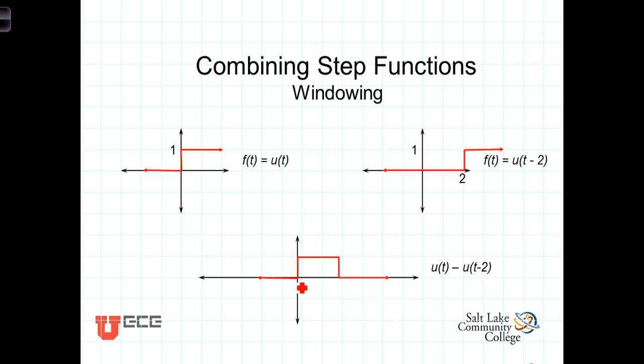In this case, the function is zero for T less than zero. It's zero for T greater than some value, in this case, two. And in between, the function has a value of one.